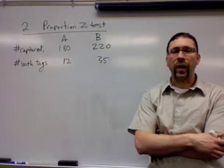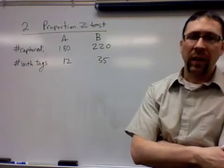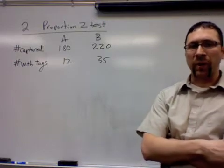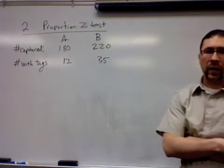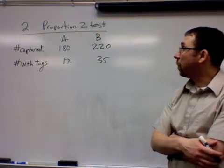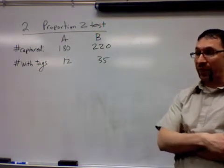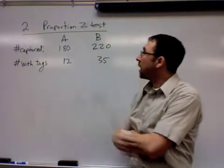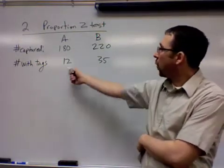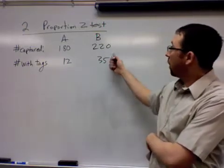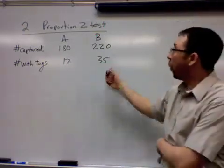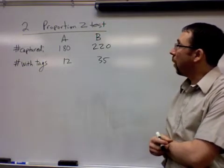A while later, they went back to these islands and recaptured the birds. As they recaptured them, they took note of how many actually had tags on them still. We had a recapture on revisiting the islands—180 birds captured the second time in Island A, and only 12 of those had tags on. Compared to Island B, where they captured more birds and got more with tags.